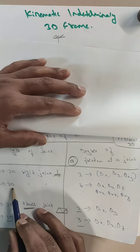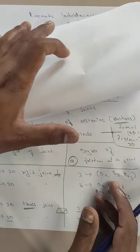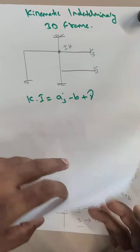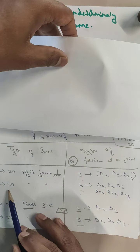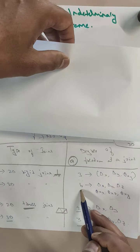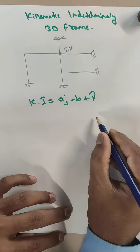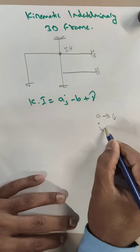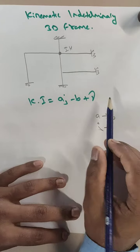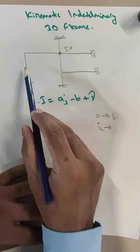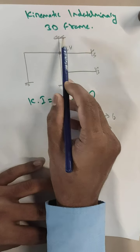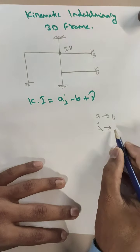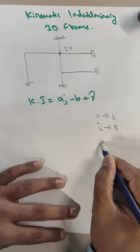In our case, this is a 3D rigid joint, so the 'a' value will be equal to 6. The 'j' value is nothing but the number of joints available, so counting: 1, 2, 3, 4, 5, 6, 7, and 8 — the number of joints is 8.